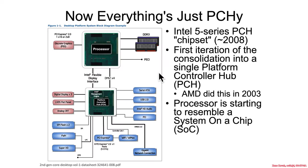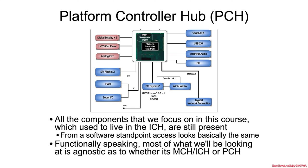That leaves you with our more modern architecture: the platform controller hub. You have a processor and now a faster DMI 2 interface, so a little bit less of a bottleneck. Intel did this around 2008 and AMD did this around 2003. Things start looking more and more like a system on a chip as chips get combined into single packages. The stuff we care about in this class are things attached to the ICH in the old architecture and the PCH in the modern architecture.